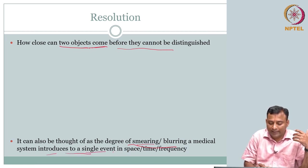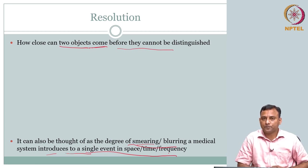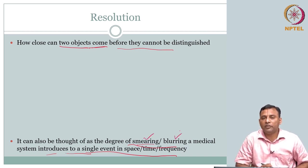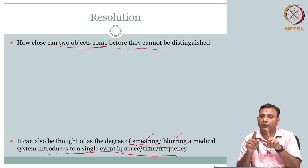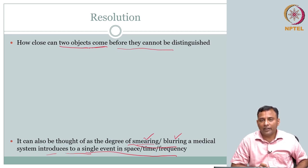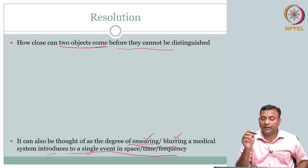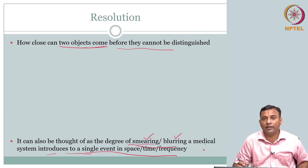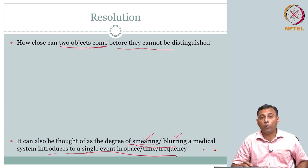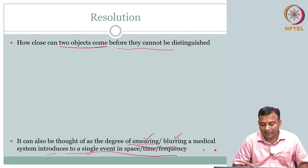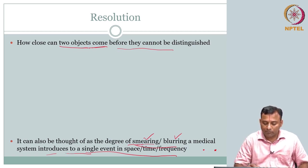A system introduces blurring or spreading of a single event in space, time, or frequency. We discussed the point spread function — if you put an infinitesimally small point through the imaging system, you may get a slightly bigger, blurred version of that point. So resolution can also be thought of as some kind of smearing or blurring. If I can measure that spread, it will relate to resolution.